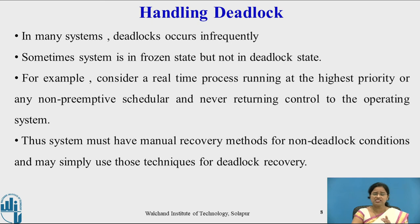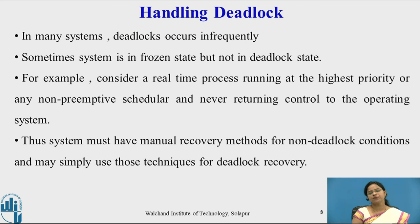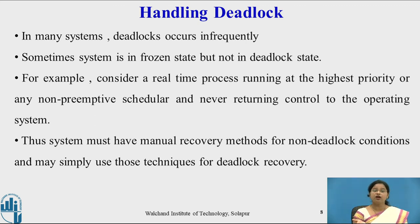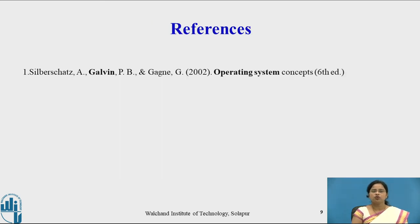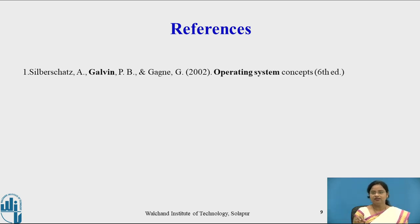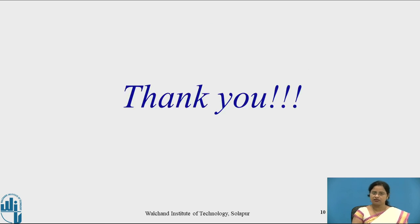This is how deadlock prevention or deadlock avoidance mechanisms must be present in the system, and if the system enters into a deadlock state, there must be a deadlock recovery mechanism. This is how we can handle deadlock in the system. Thank you.